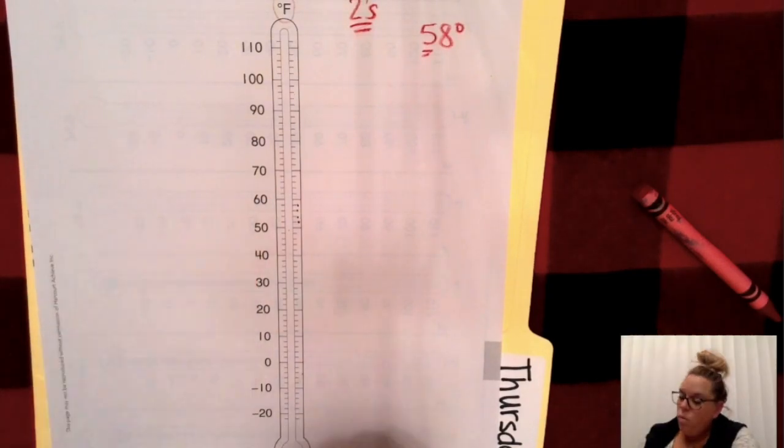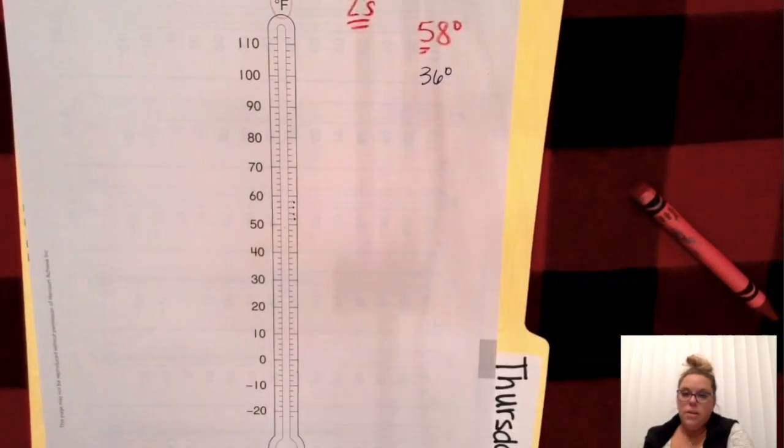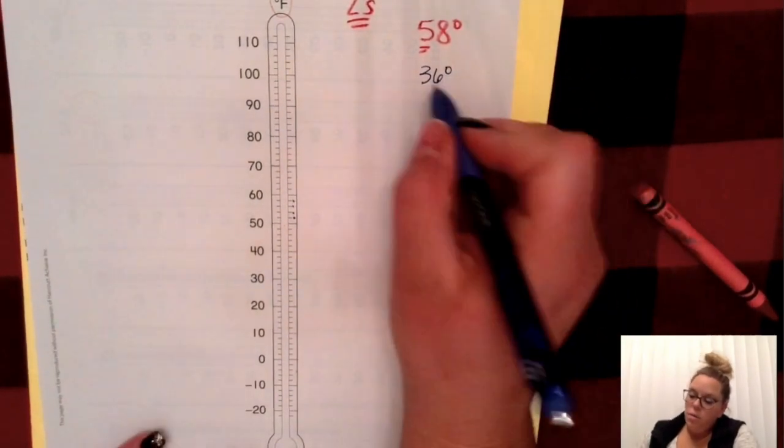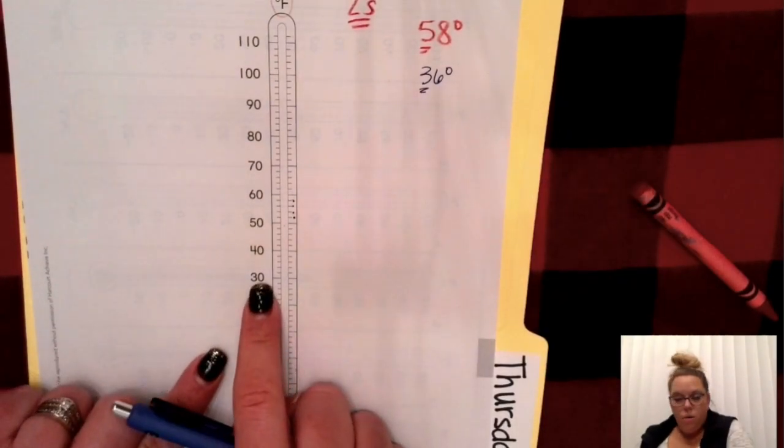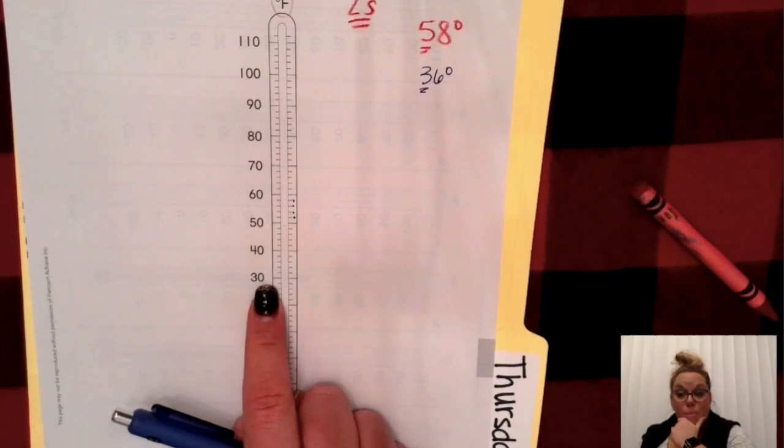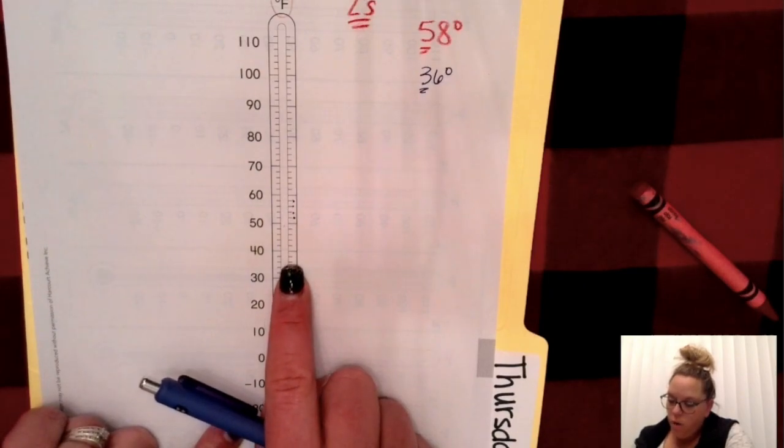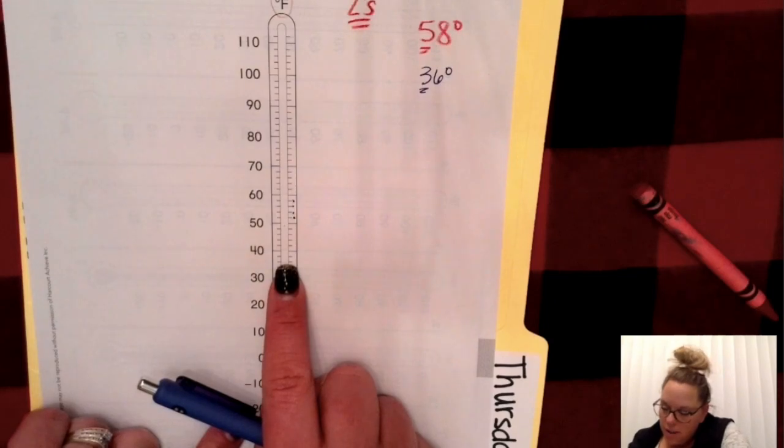Now, what about 36? 36 degrees. Well, you heard 30, so you're going to go to 30 first. And now you're going to count by twos until you get to 36: 32, 34, 36. So I would draw a line across there at 36 and color the inside of the thermometer down.